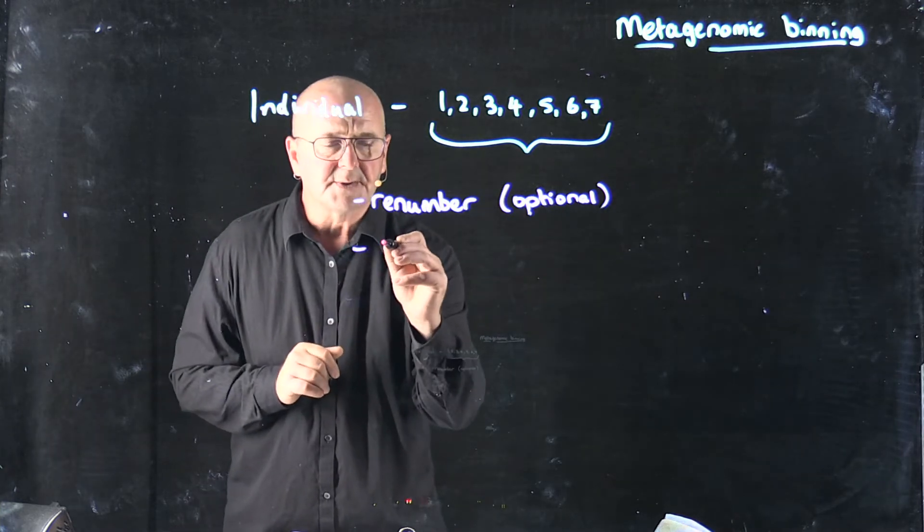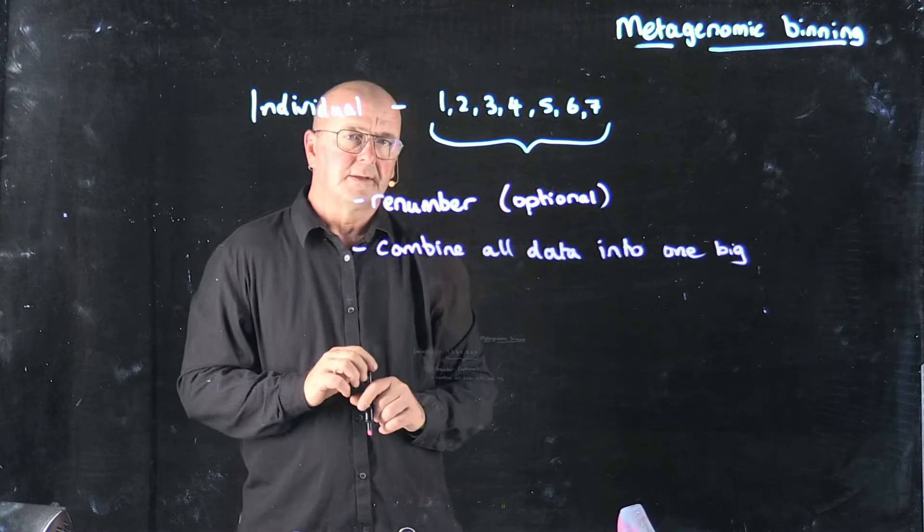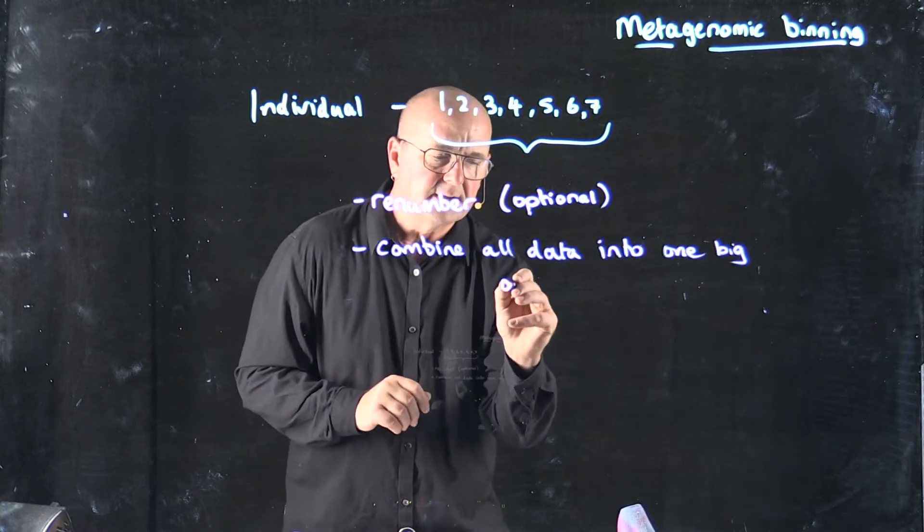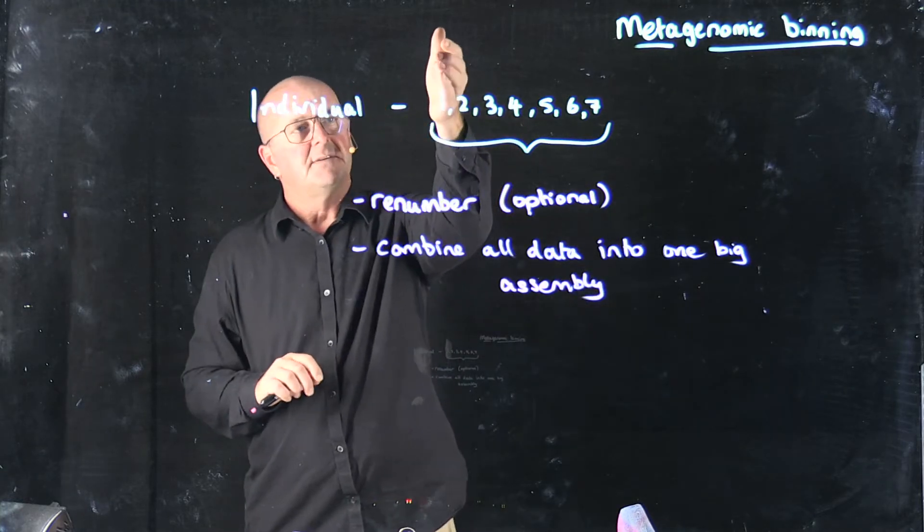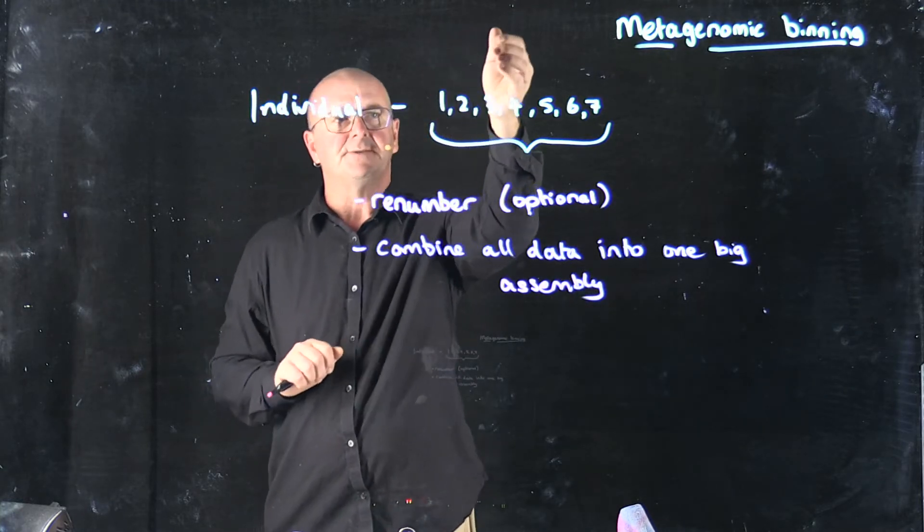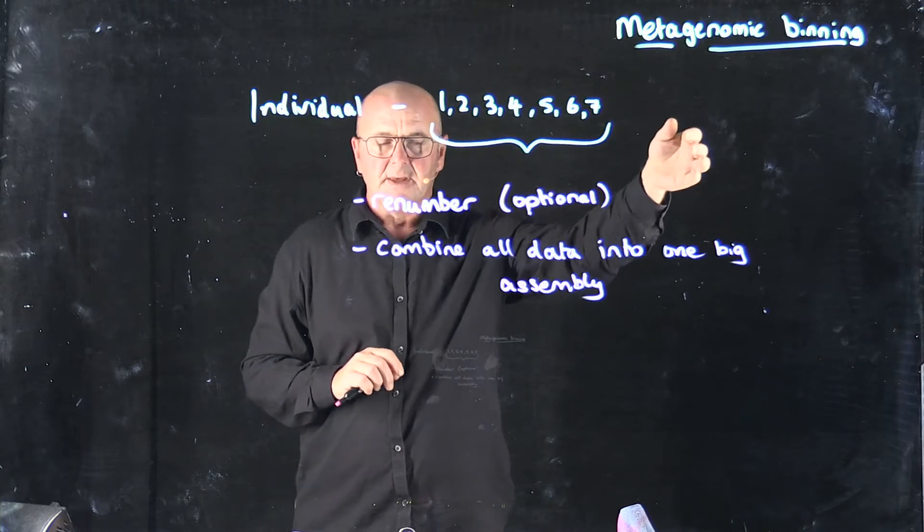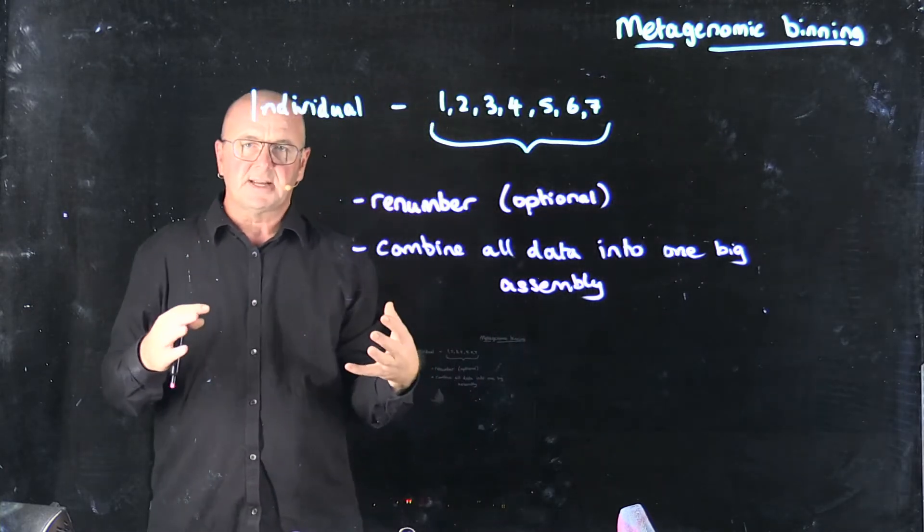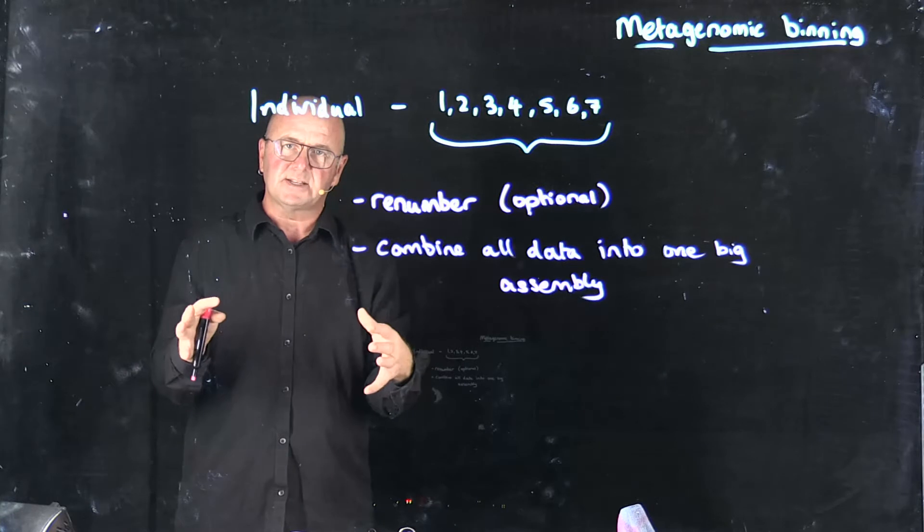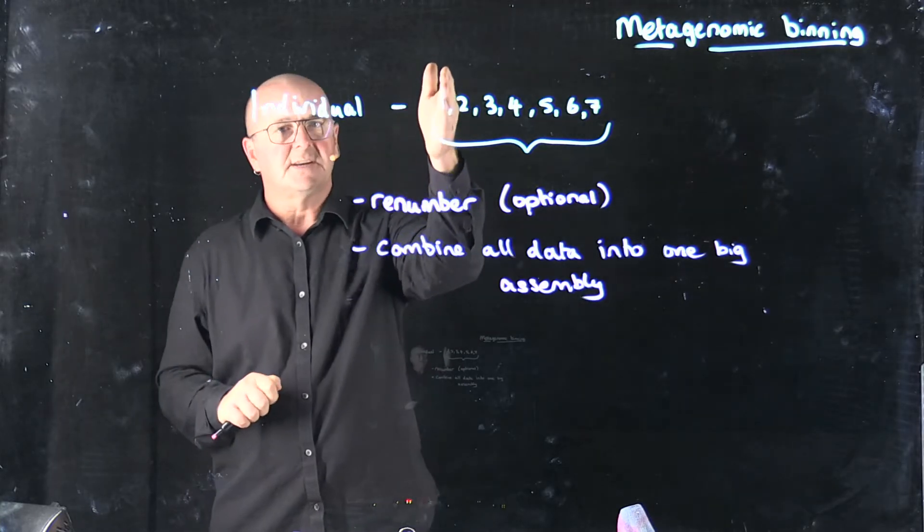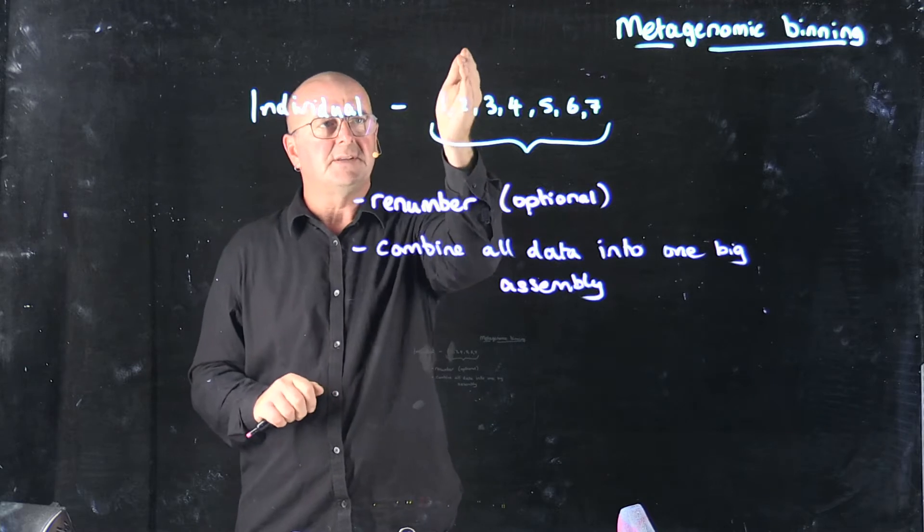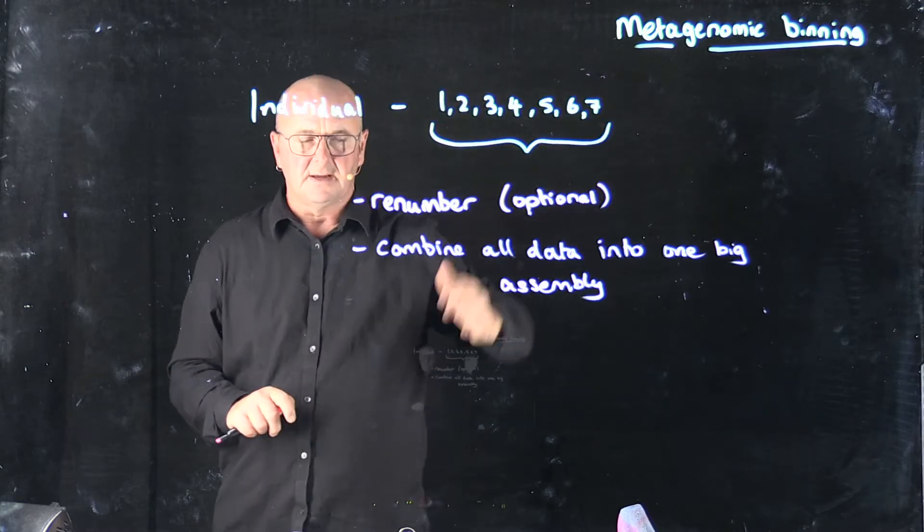Next, what we're going to do is we're going to combine all the data into one big assembly. And so we're going to take each of our FastQ files from day one, day two, day three, day four, and so on, and we're going to mix them together with spades and we're going to do one big assembly with all of the dataset. So we'll have contigs where we have data from sample one, sample two, sample three, and so on.